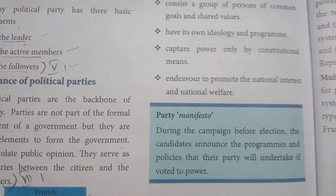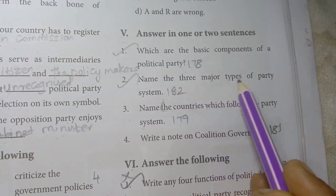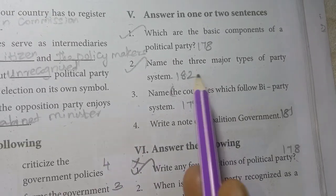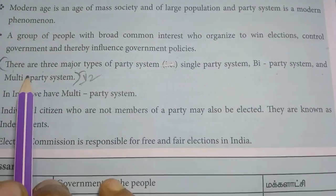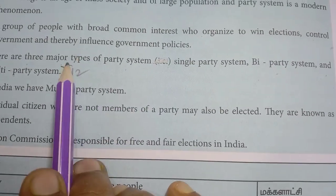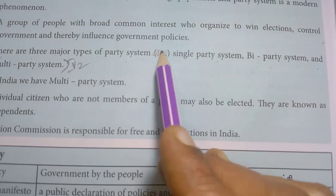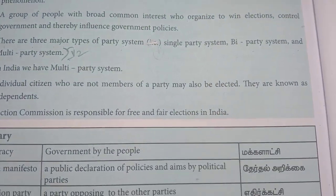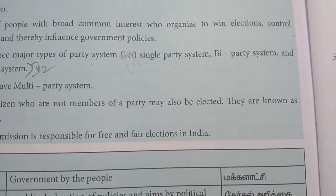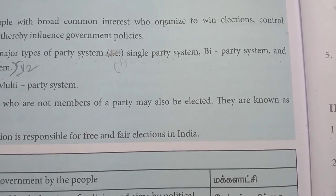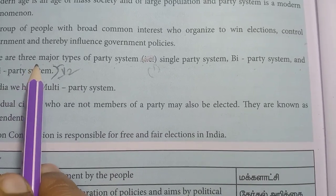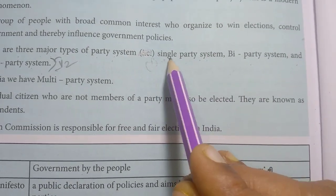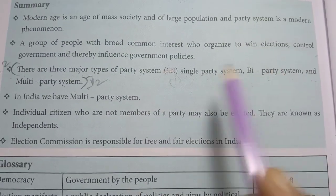Second question: name the three major types of party system. The three major types of party system are: single party system, bi-party system, and multi-party system.